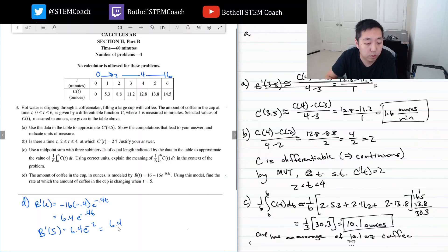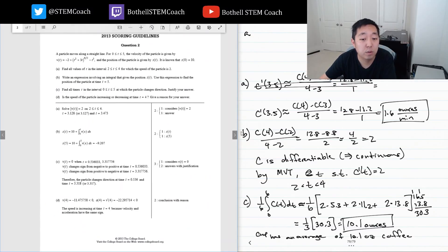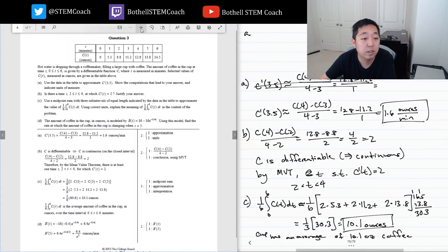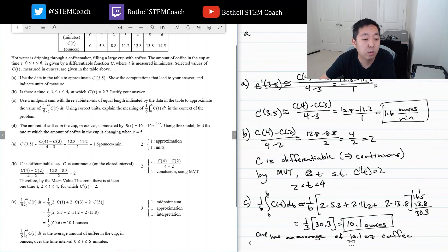Let's look at the scoring guidelines for question three. 1.6 ounces per minute, that's good. By the mean value theorem, c prime—yeah, there exists. 10.1 ounces is the average amount of coffee in the cup over that time interval. And 6.4 over e squared.